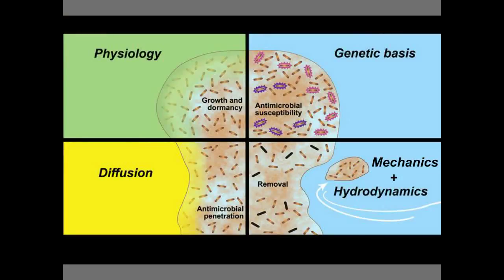These are the four topics I want to touch on. Diffusion is important in the penetration of an antimicrobial agent into a biofilm. The flow of water around the biofilm and the mechanics of the biofilm itself are important in biofilm removal — a key and still poorly understood aspect of biofilm control. Then we have the biology, ranging from whole cell physiology all the way down to the genetic level, where we're starting to see clues about which genes are important in protecting a biofilm from antimicrobials.